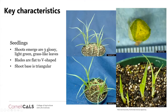As a seedling, the shoot emerges as three glossy, light green grass-like leaves — they are a lime-green color, not a deep green. The leaf blades are flat to V-shaped and tend to emerge from their sheath in a triangular shape. As you can see, the shoot base is triangular. If you have something with a triangular base like that, it's probably a sedge — remember, sedges have edges.